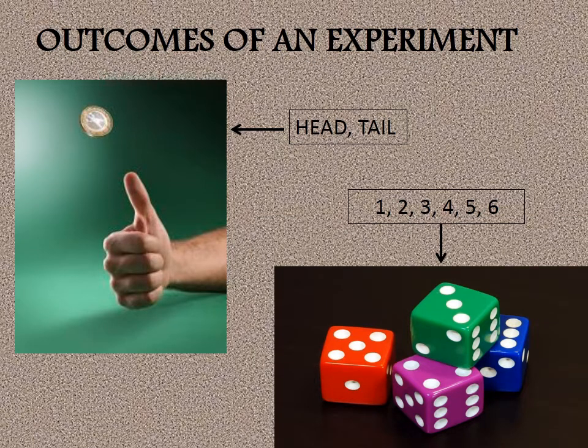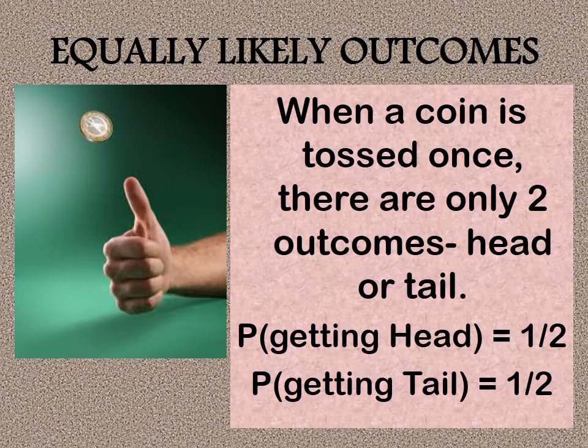When we say outcomes, we mean the possible results of a random experiment. In the random experiment of tossing a coin, we get head or tail as the result, so they are the outcomes. Similarly, when we throw a die, the possible outcomes are the numbers 1, 2, 3, 4, 5, and 6.